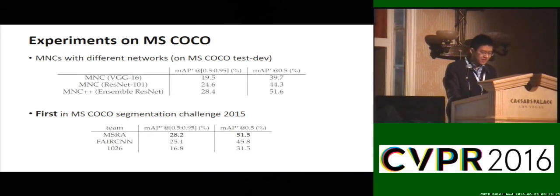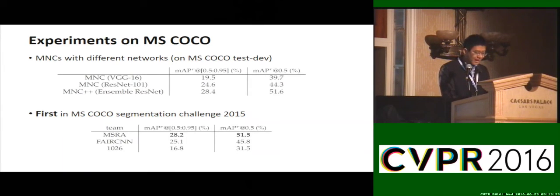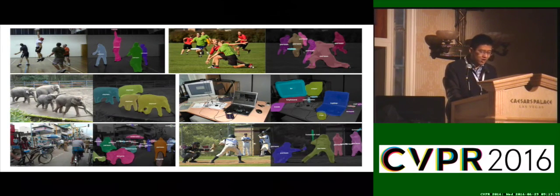We further evaluate our method on the newly established MS COCO dataset. Following COCO guidelines, we use the train/val images for training and test on the test-dev set. Our MNC method, solely based on CNNs, can easily benefit from developments in backbone network structure — for example, the latest ResNet model. By combining MNC with ResNet, our method won first place in the MS COCO Segmentation Challenge 2015 by a healthy margin over other competitors. Our method delivers reasonably good results on this challenging dataset, which contains images of various scenes covering different kinds of objects at different scales with heavy occlusions.